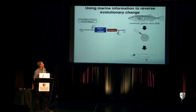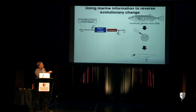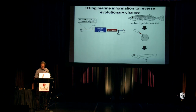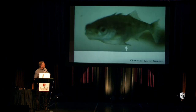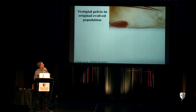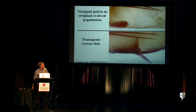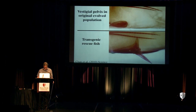If this is really the right gene and that's the right regulatory information, we should also be able to do a more ambitious experiment and try to reverse the evolutionary change. We took eggs from an evolved pelvicless stickleback and injected not a GFP reporter, but a construct where the marine control information was hooked up to a PITX1 cDNA. We were thrilled to see that reintroducing the marine regulatory information could restore the pelvis — the transgenic fish showed a nice serrated spine on a restored pelvic structure.